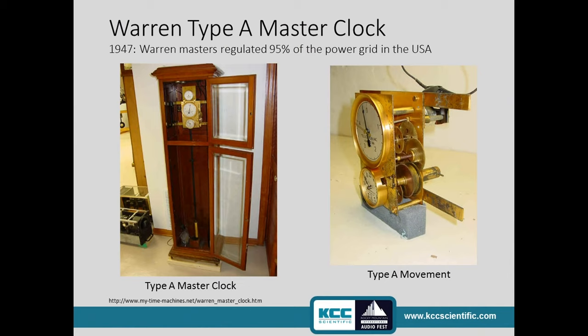The more important thing related to controlling frequency was his inventions related to the master clocks that controlled the generators that created electricity. Electric master clocks operated with basically two gearing systems — one connected to the power line and another connected to a pendulum clock. Those two were compared, the difference was displayed, and that was used to manually change the frequency. Why did anybody care about frequency back then? So what if it was 61 hertz?